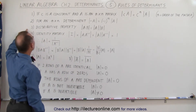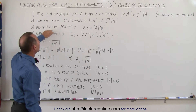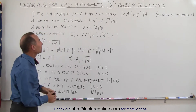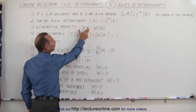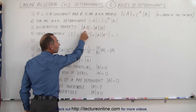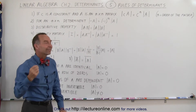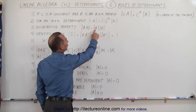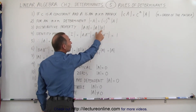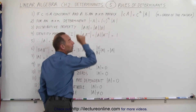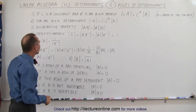The third rule is that determinants have what we call the distributive property. If we have the product of two matrices and then take the determinant of that product, it is the same as taking the determinant of the first matrix times the determinant of the second matrix — you get the same result.